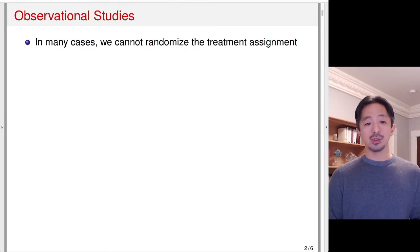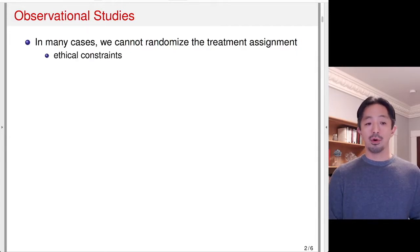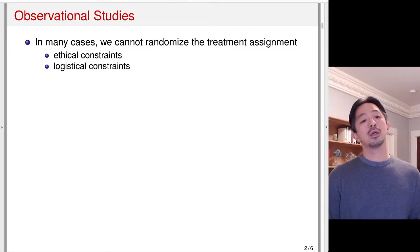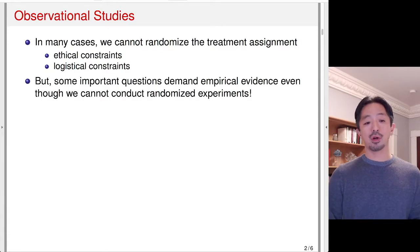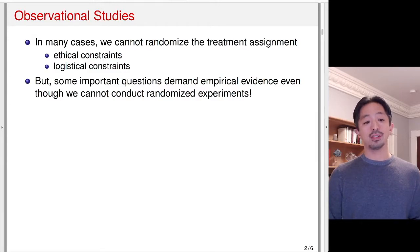In many cases, we can't simply conduct randomized trials. For ethical reasons, it might not be possible to randomize the treatment assignment. And for logistical reasons, that may not be possible. But there are a lot of important questions in social sciences that demand empirical evidence, even when we cannot randomize the treatment assignment.